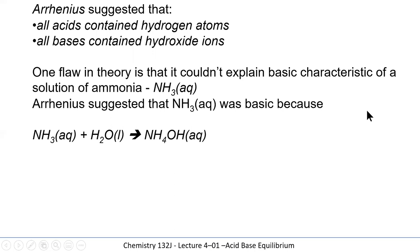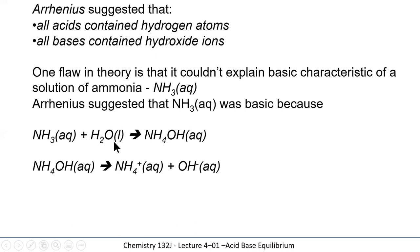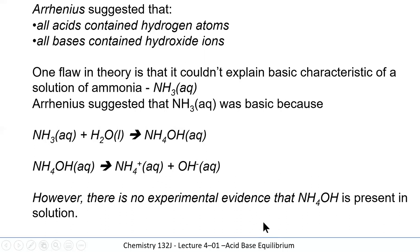A new idea had to be created to explain ammonia's basic behavior. One suggestion was that ammonia can combine with water to make ammonium hydroxide, and that is how the hydroxide is created. In solution, ammonium hydroxide liberates ammonium ions and hydroxide ions. However, there was no experimental evidence that ammonium hydroxide actually existed in solution, so the idea had to be rethought.